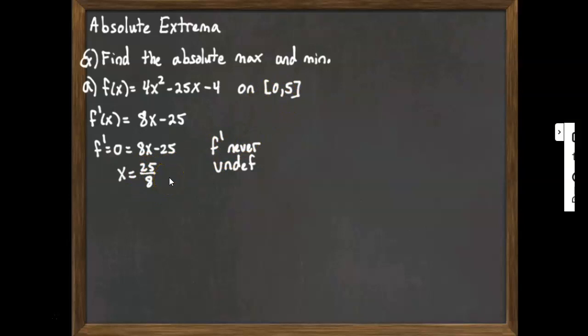Whichever of those three values turns out to be the biggest will be the maximum. Whichever turns out to be the smallest will be the minimum. So f of 0, if you plug in 0 to the original function, not to the derivative, you get f of 0 is equal to negative 4.